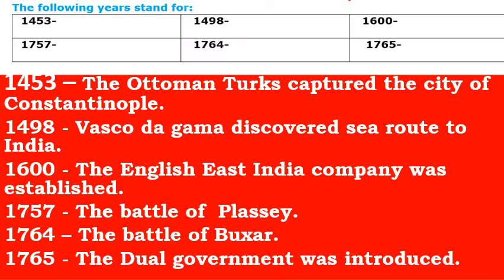Here are six important years from the first lesson in History. 1453: the Ottoman Turks captured the city of Constantinople. 1498: Vasco da Gama discovered the sea route to India. 1600: the English East India Company was established. 1757: the Battle of Plassey took place. 1764: the Battle of Buxar. 1765: the dual government was introduced.